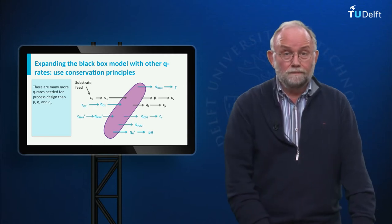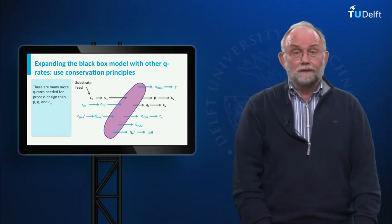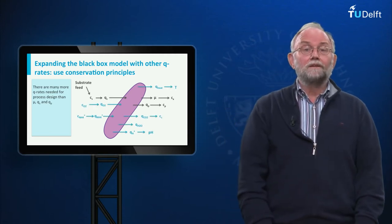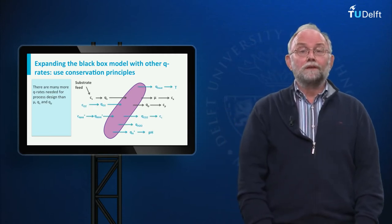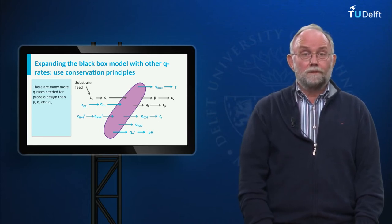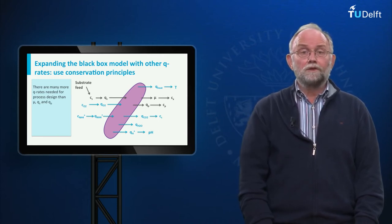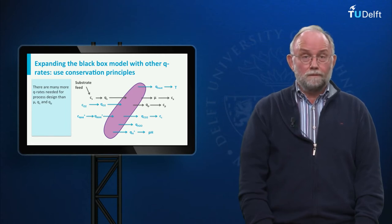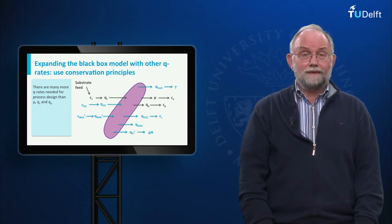For example, to quantify the heat removal in the fermenter we need Q-heat. For oxygen supply we need Q-oxygen. For pH control we need Q-proton, etc.